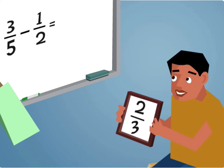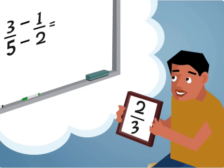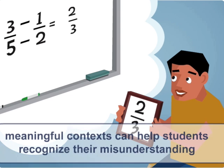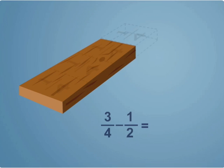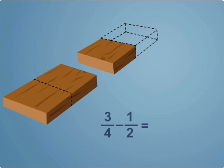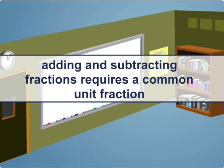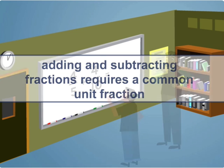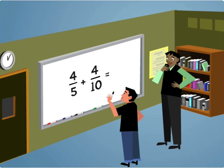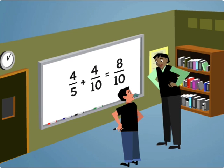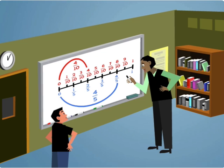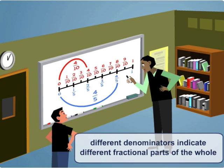A common mistake students make when adding or subtracting fractions is to add or subtract the numerators and denominators separately. Meaningful contexts can help students recognize their misunderstanding. If a student has a piece of wood that is three-fourths of a foot long and cuts off a piece that is half a foot long but ends up with one foot of board, he can clearly see that he's made a mistake. Adding and subtracting fractions requires a common unit fraction. Not recognizing that different denominators indicate different sized unit fractions leads to many common misconceptions. Use of fraction strips or number lines can help students see how different denominators indicate different fractional parts of the whole.